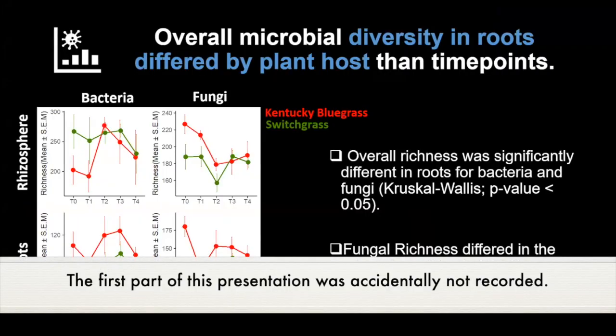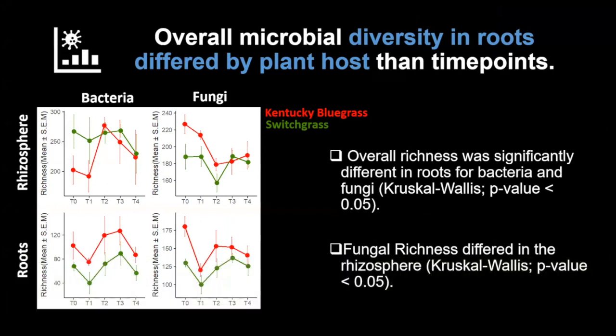One of the big things is that the diversity in the roots differs by plant host. The plants were different. On the x-axis are the different time points, and the y-axis is the richness of the different plants. For bacteria and fungi, they started different at the very beginning, but towards the end they look fairly similar with similar richness. On the contrary, in the roots for both bacteria and fungi across all time points, Kentucky had higher richness compared to switchgrass.